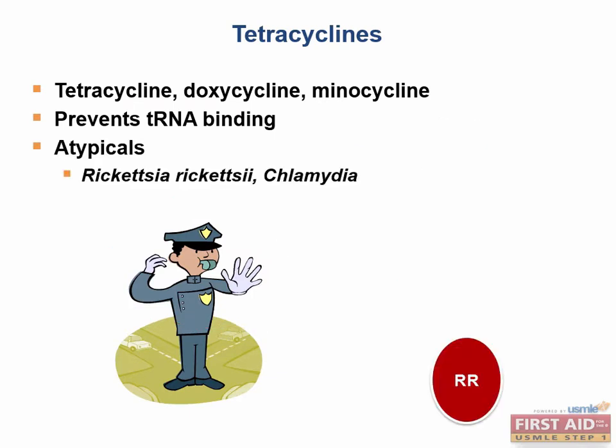Tetracyclines are active against atypical bacteria. They have a unique ability to accumulate in cells and therefore are used against intracellular pathogens such as rickettsia rickettsii and chlamydia. The word chlamydia means 'cloak' in Latin — the bacteria was named this way because it is able to cloak or hide itself within cells, making it an obligate intracellular pathogen.